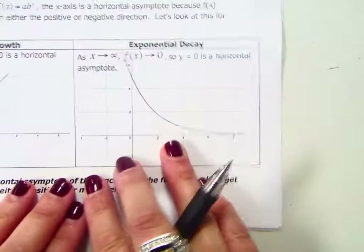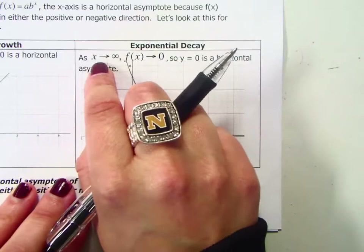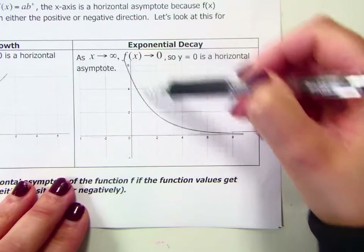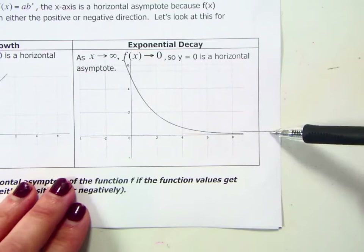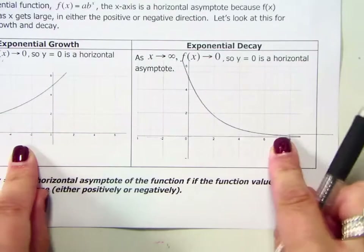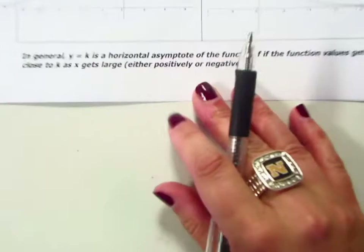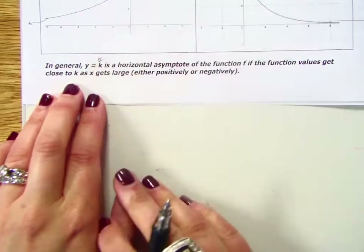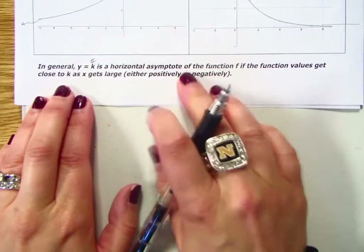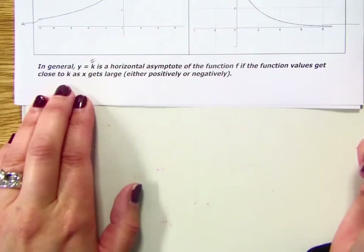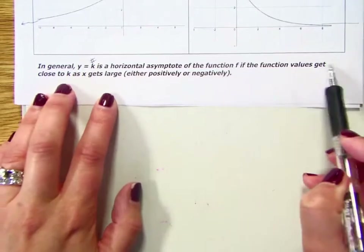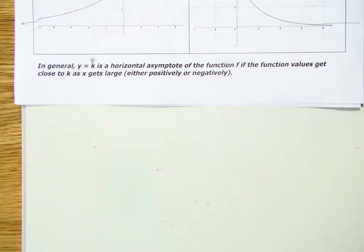We can look at the same thing for exponential decay. In this case, as x approaches positive infinity — as our x values get closer and closer to bigger positive numbers — those y values get smaller and approach 0. Now, the x-axis is not the only horizontal asymptote you will have. In general, y equals k is a horizontal asymptote — k is just some number. y equals k is a horizontal asymptote if the function values get close to that number as x goes way positive or way negative.